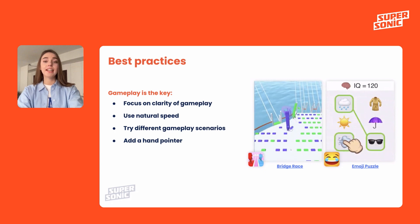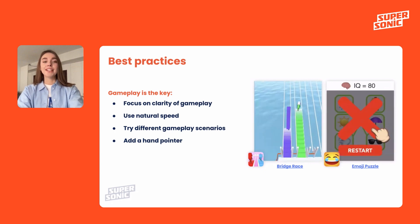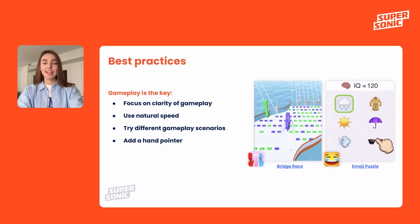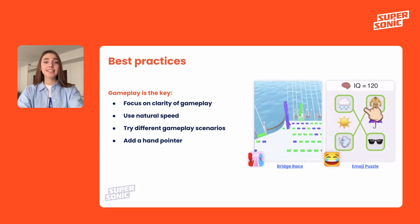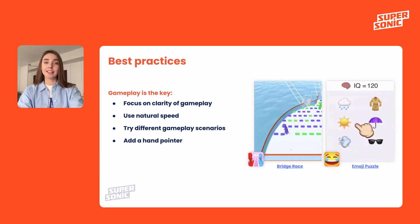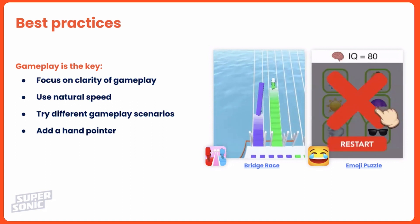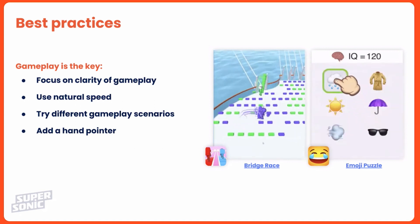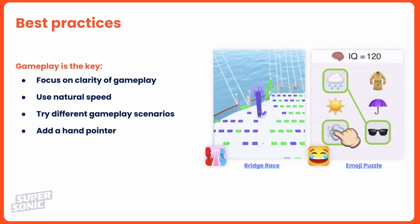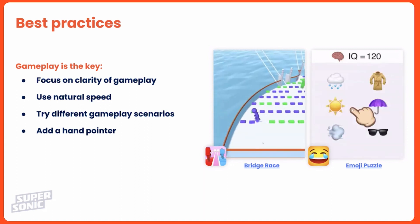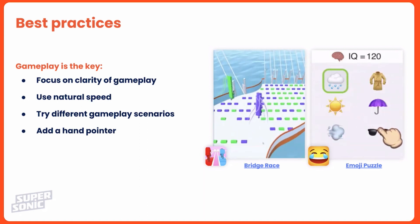Try different gameplay scenarios in your videos. We all know that fail situations work really well in hyper-casual games, but don't forget about testing wins as well. Also try showing different levels — the easy one and the challenging one. The bonus tip: the more emotions you emphasize, the better. Add a hand pointer if the control isn't clear — it's mostly relevant for puzzle games. Runners don't usually require an additional hand pointer because users can read the mechanic easily.